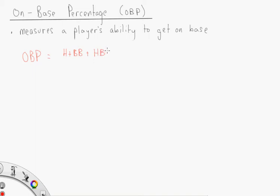Now all these values in the numerator are the number of times a batter reaches base because of their skill or effort.